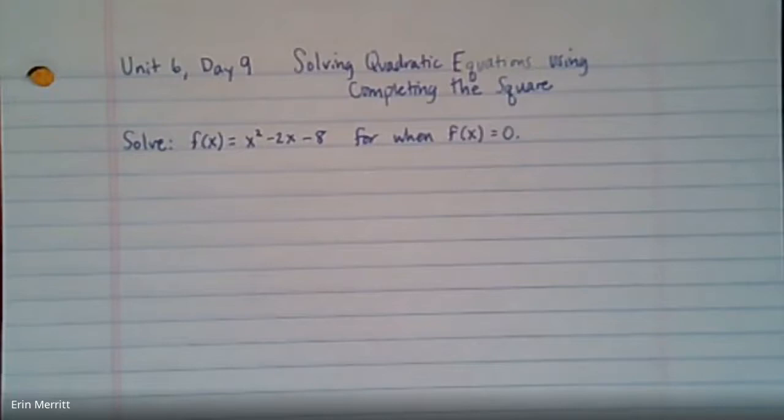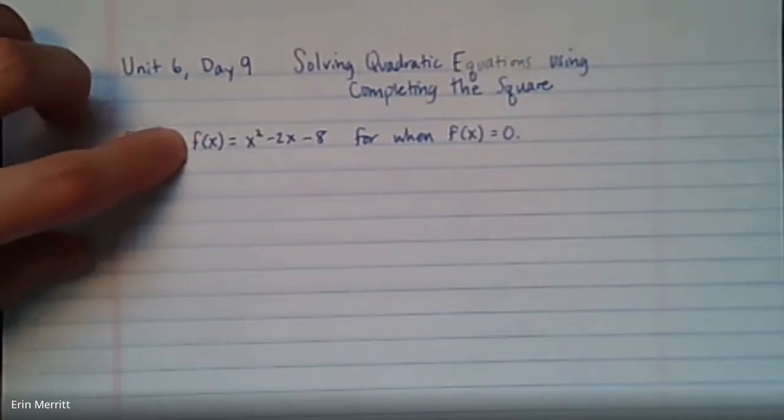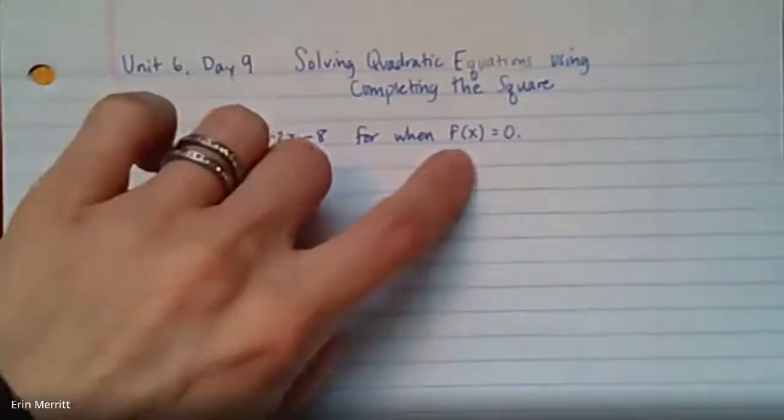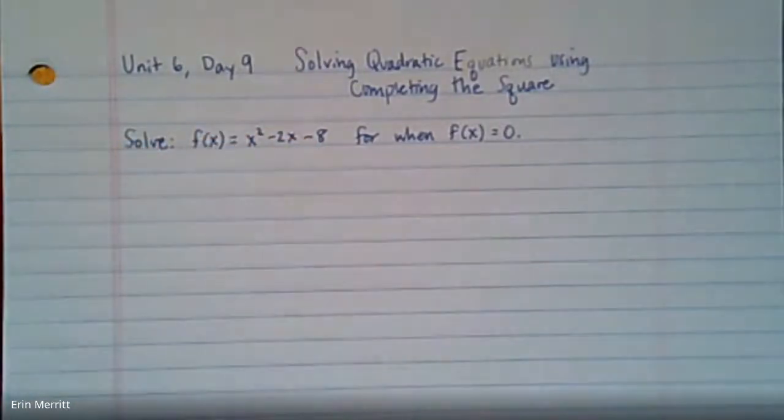Today is day nine of our quadratics unit and we're going to be talking about not just solving quadratic equations but how to use completing the square to do it. I've got ourselves set up here with a first example to solve for when f of x equals x squared minus 2x minus 8 when f of x equals zero. I want you to think of it as a parabola and what's the implication when we say f of x equals zero.